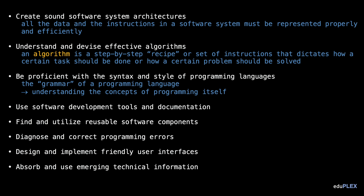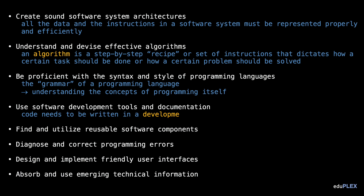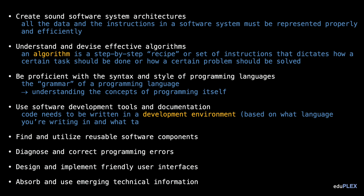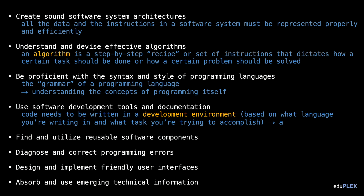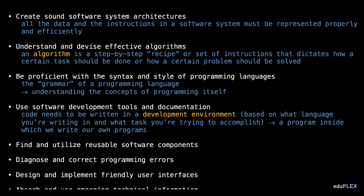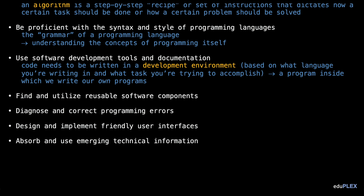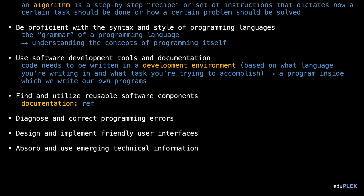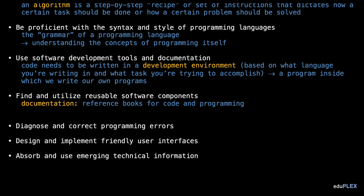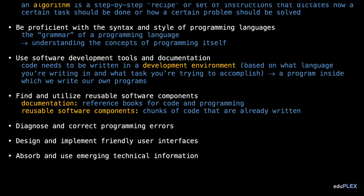When you're writing code for programs, however, you're not just typing inside of a Microsoft Word document. Your code needs to be written in a development environment — based on what language you're writing in and what tasks you're trying to accomplish — which we can think of as a program inside of which we write our own programs. Software engineers need to know how to use these development environments and all of their tools, as well as available documentation, which is basically like reference books for code, and reusable software components — chunks of code that are already written since they're used so often. These make writing new code much more efficient, since you don't have to reinvent the wheel every time. You gather what's already been written and build on top of that.